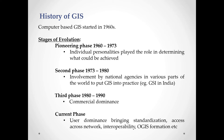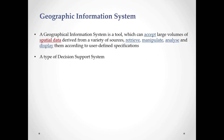The current phase is user dominance, bringing standardization, access across networks, interoperability, and technology with GIS information. Now people are using maps on their mobile phones — that is the current phase of user dominance. A Geographic Information System is a tool which can accept large volumes of spatial data derived from a variety of sources.